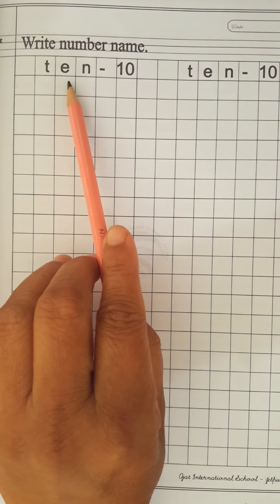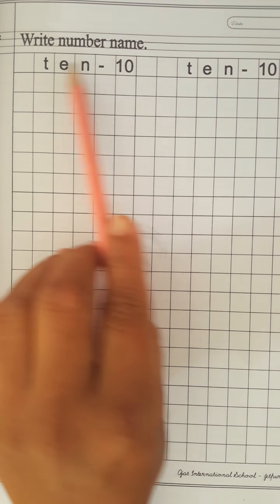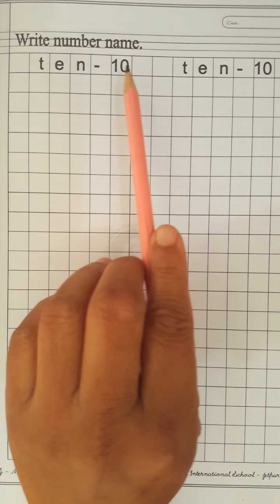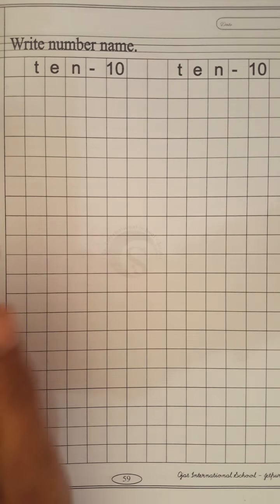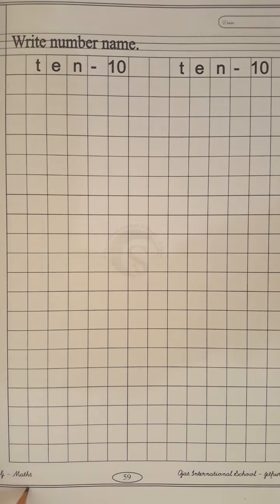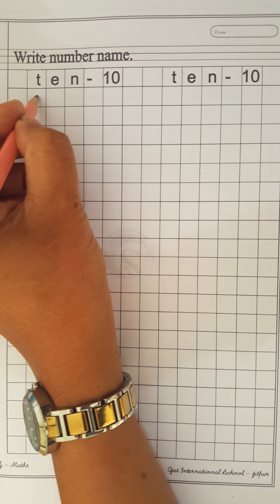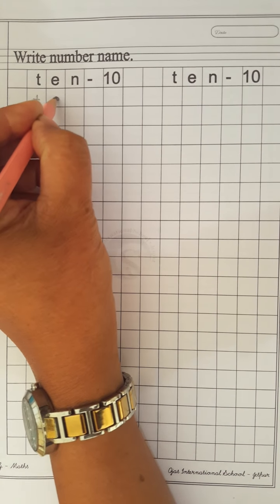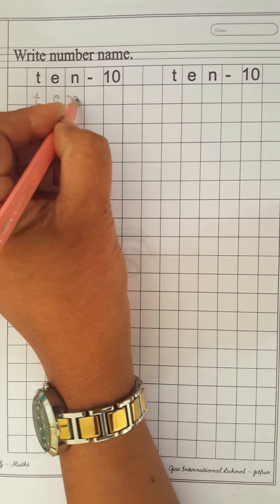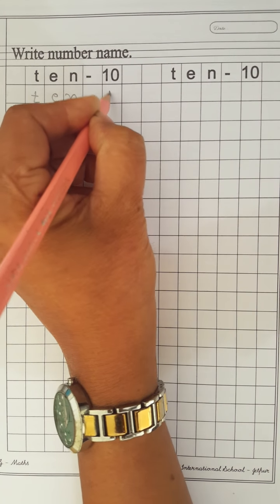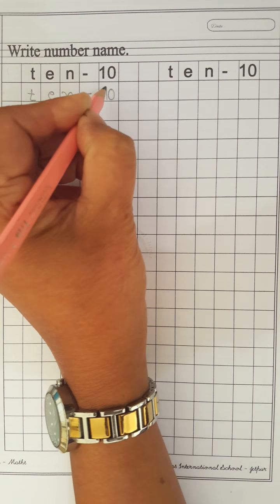And today, which number name we will write? Number name of 10. T-E-N-10. So, let's write. How to write? First, you have to leave this line. And start from here in this box. T-E-N-10-10.